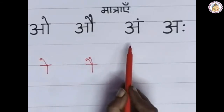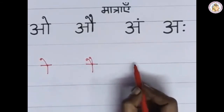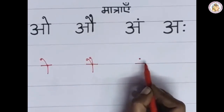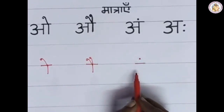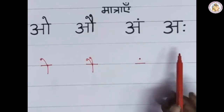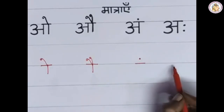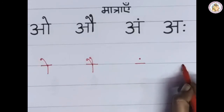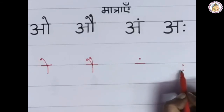Next one is 'ang' (anusvara). On the top of the vyanjan, place a dot like this. This is the 'ang' Matra. Next one is 'ah' (visarga). After the vyanjan, place two dots like a colon. This is the 'ah' Matra.